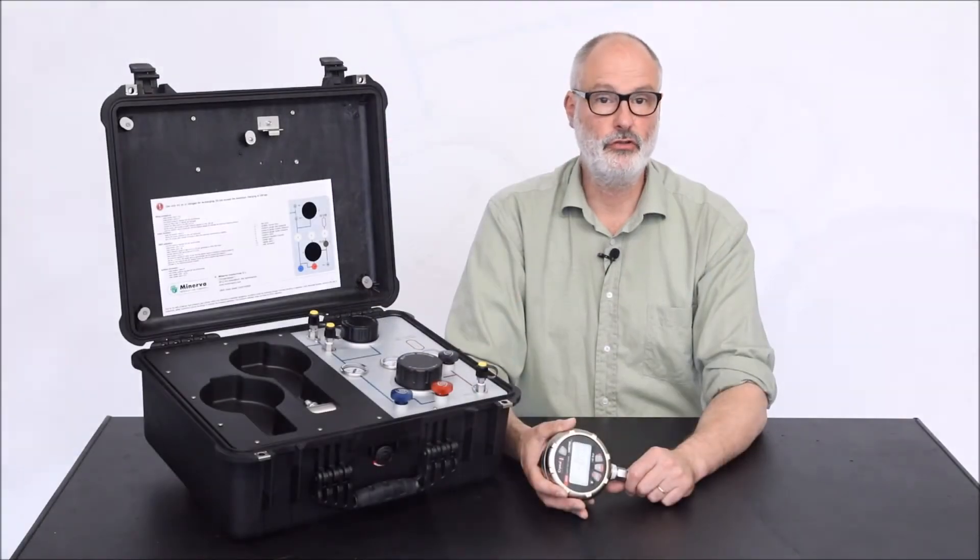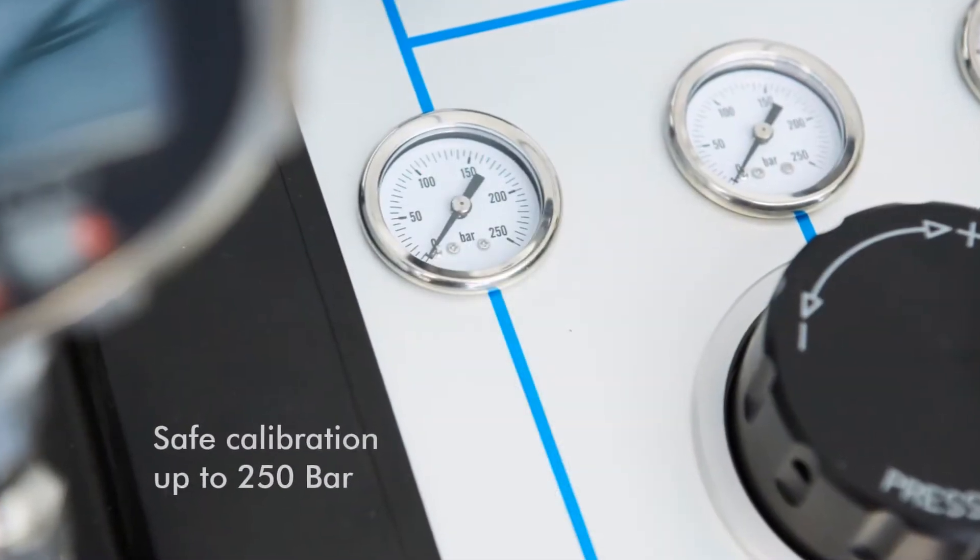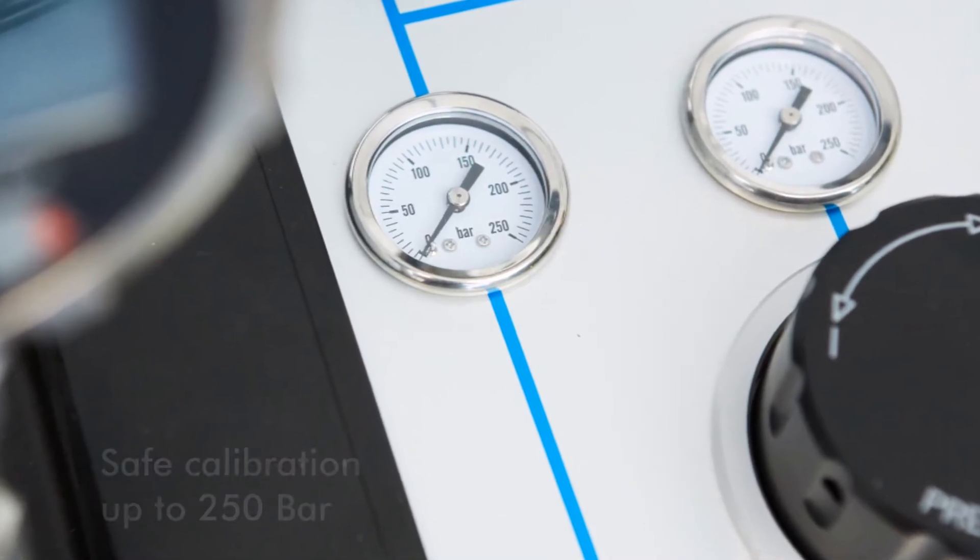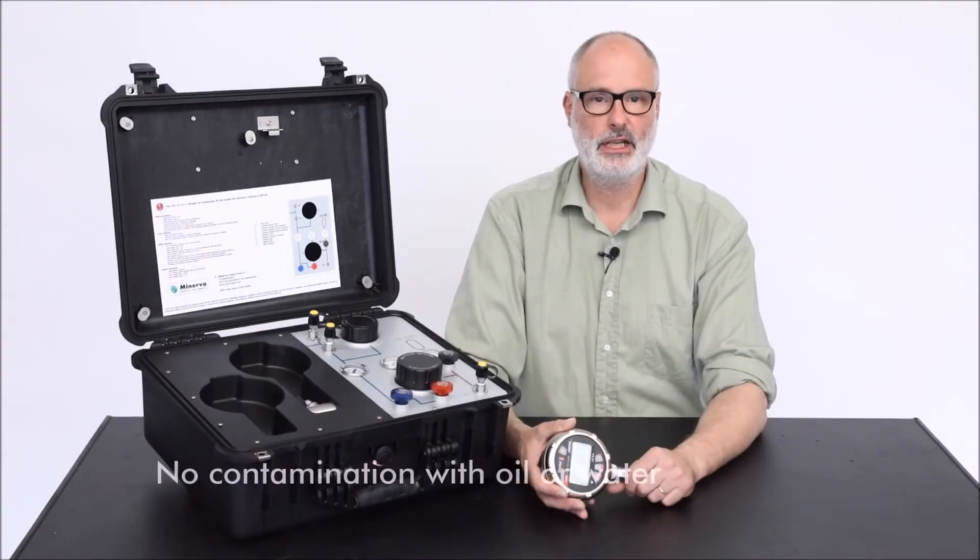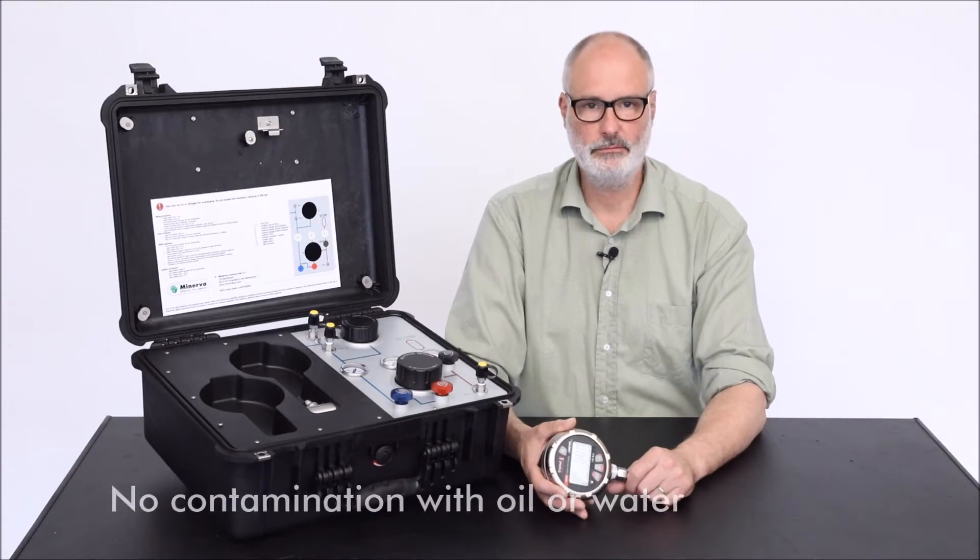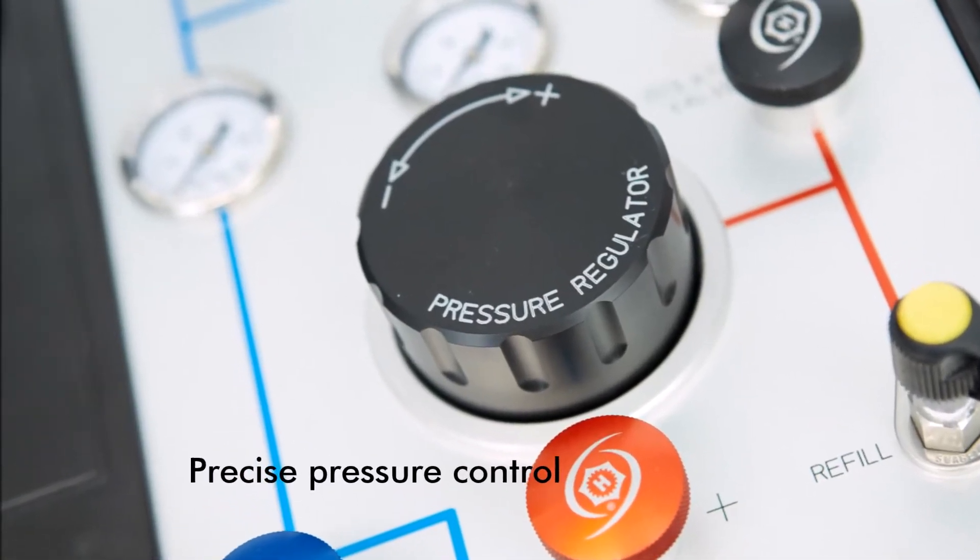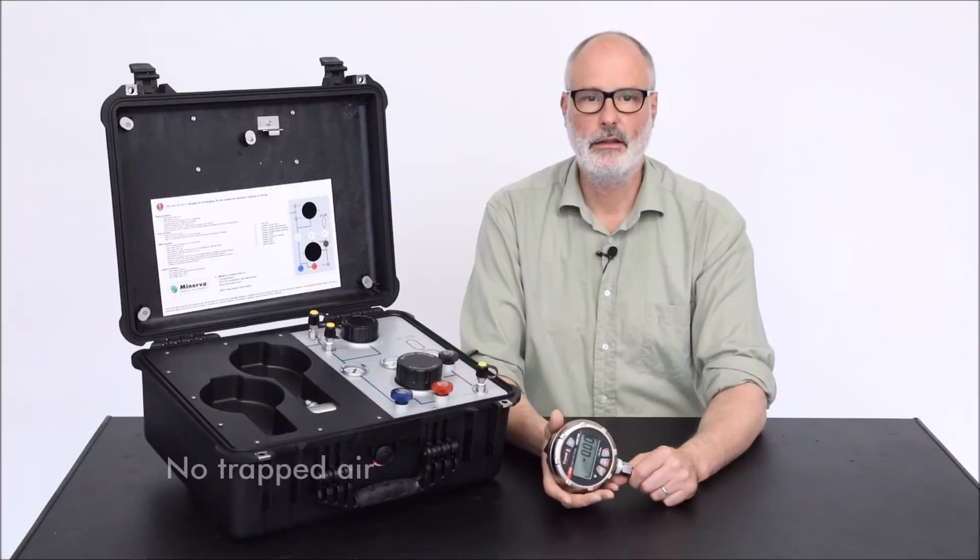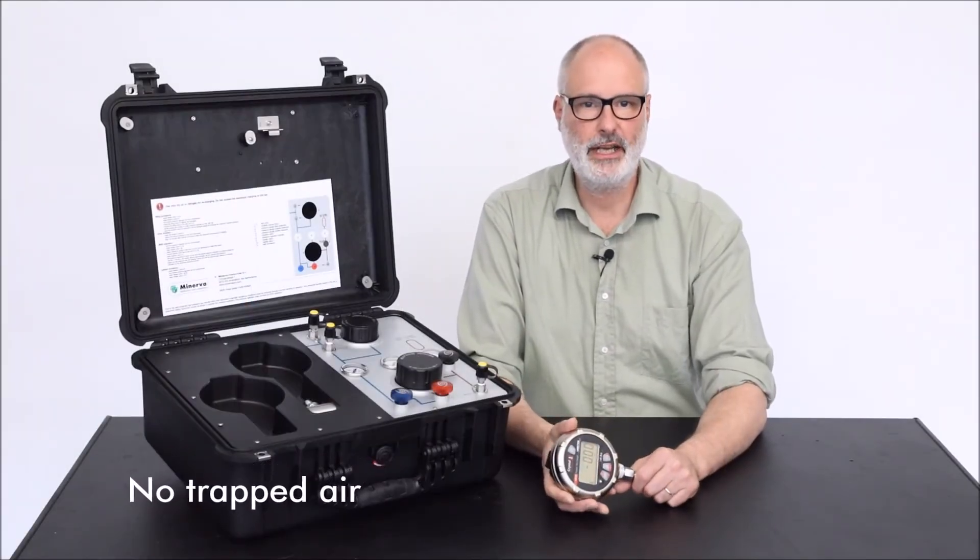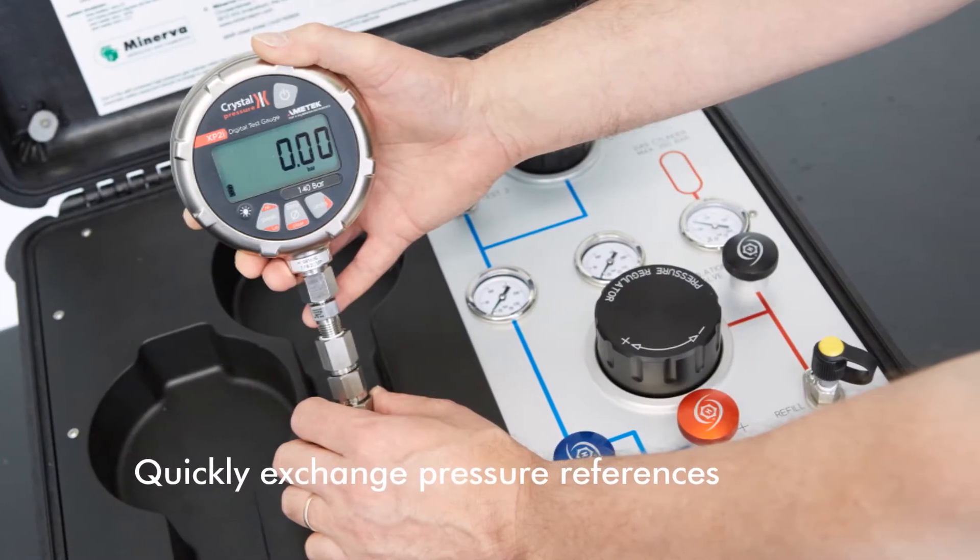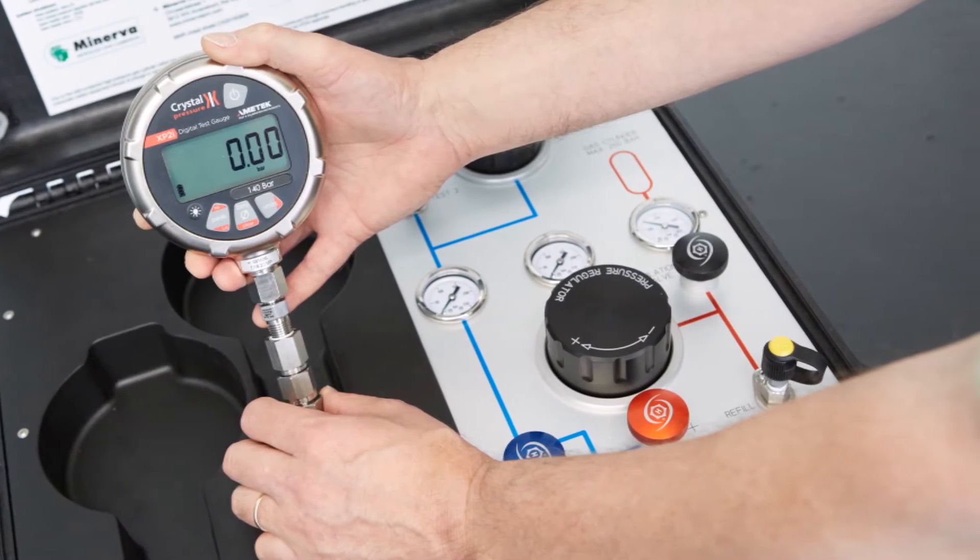This case enables you to perform safe pneumatic calibrations up to a maximum pressure of 250 bar, not contaminate the device on test with oil or water, perform precise test pressure control using a pressure balance volume adjuster, eliminate trouble with trapped air in hydraulic systems, and exchange calibrator pressure references quickly and easily.